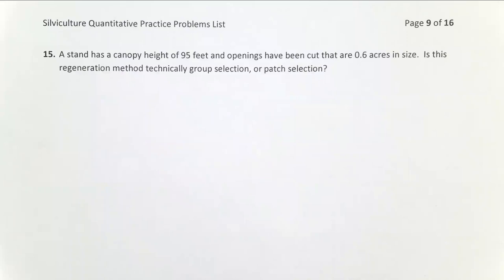We know based on our definitions that if you're opening up areas in your forest and your stand that are less than twice the width of dominant canopy height, that's group selection because it's making small openings that are going to favor more shade tolerant species.